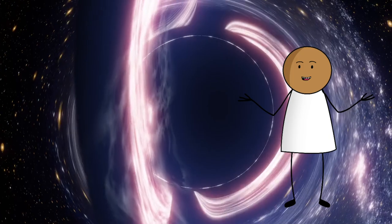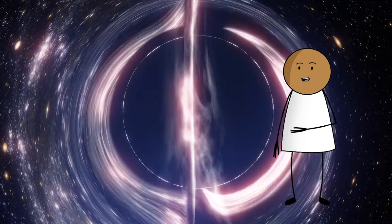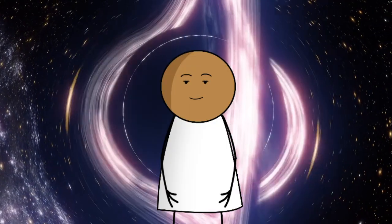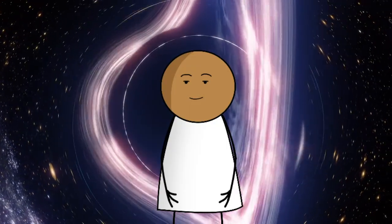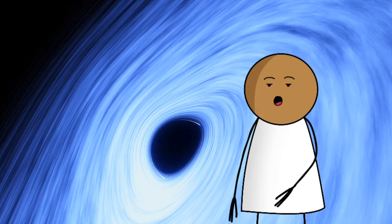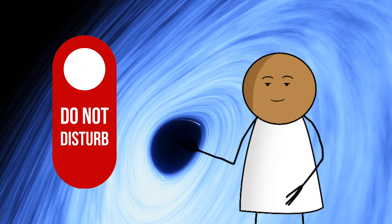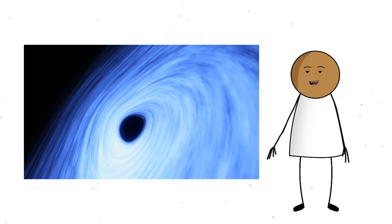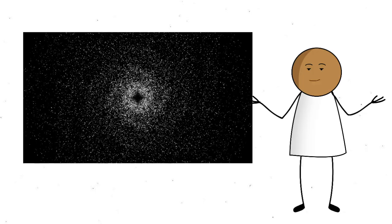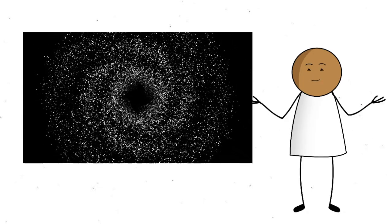We're talking about black holes, the universe's biggest drama queens. Imagine a region of space where gravity is so intense that even light, the fastest thing in the universe, can't escape. Welcome to the black hole, the cosmic equivalent of a do not disturb sign that actually enforces it. Black holes form when massive stars run out of fuel and collapse in on themselves. But they don't just become dense.